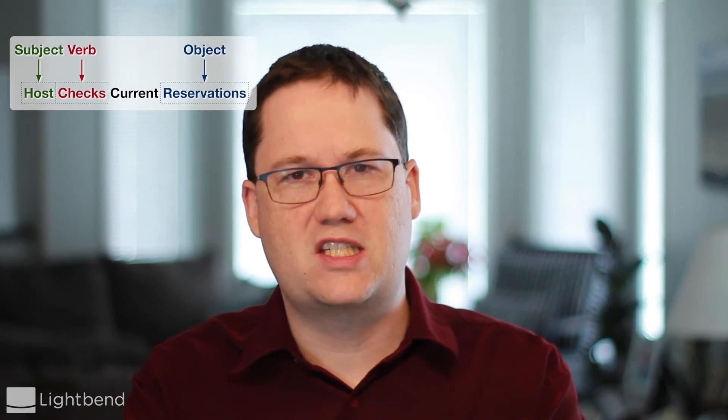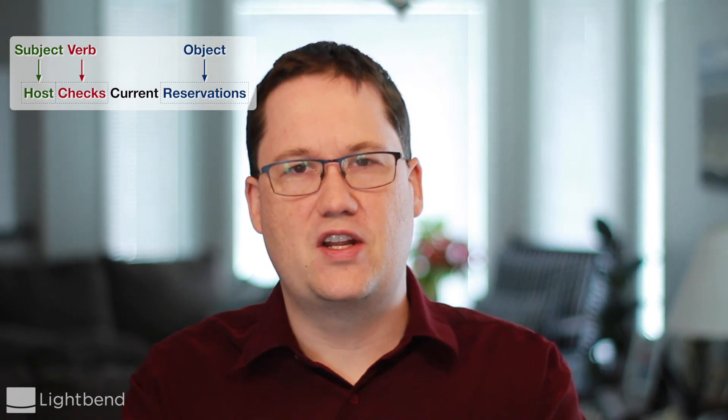Now we can simplify the object — we could say it's "current reservations," but "current" is really just a modifier on "reservations." So at the end of the day, "reservations" is really the object we're going to focus on. That's how our subject-verb-object notation looks, and we'll use it in later exercises to help us extract information from the sentence.